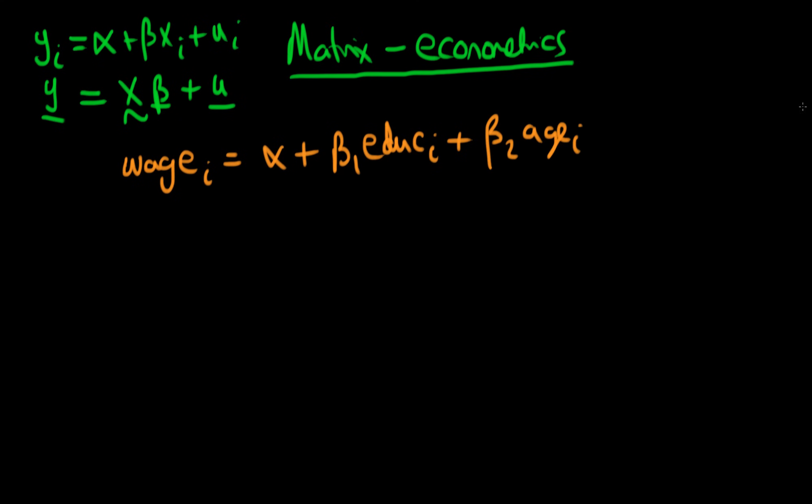I've used the subscript i here in each of the particular variables which I have observations for to indicate that this is one of the i individuals within my sample. So i here is a member of the set going from 1 to n, and the idea is that education and age don't determine wages perfectly. There is also some sort of idiosyncratic error for individual i.